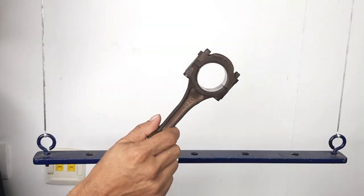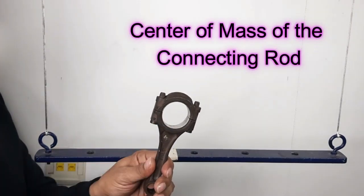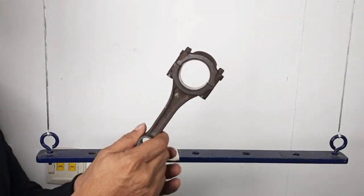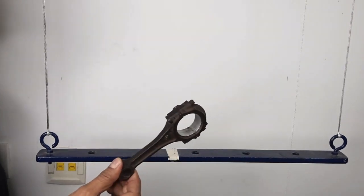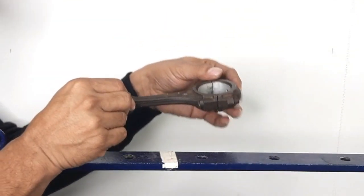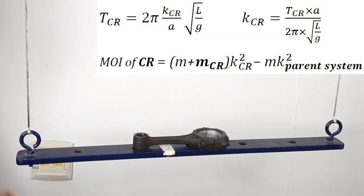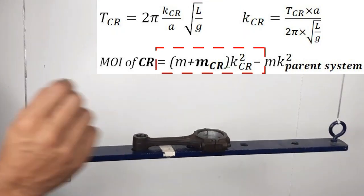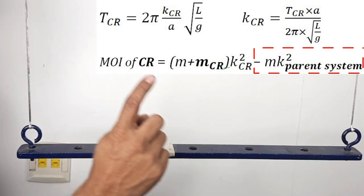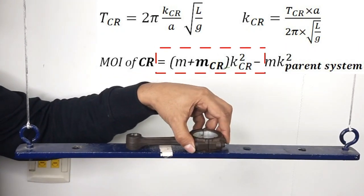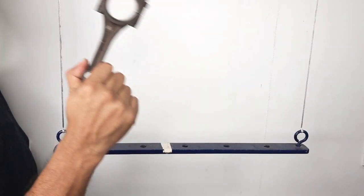The last part of the experiment is to find the K value of this connecting rod. What must be known a priori is the center of mass of the connecting rod. Assuming the center of mass of the connecting rod is at a known location and its mass is 374 grams, I will coincide the two centers of mass and give a gentle rotation. I will measure the time period to get the new moment of inertia, then subtract the moment of inertia of the parent system to get the K value and moment of inertia of the connecting rod.